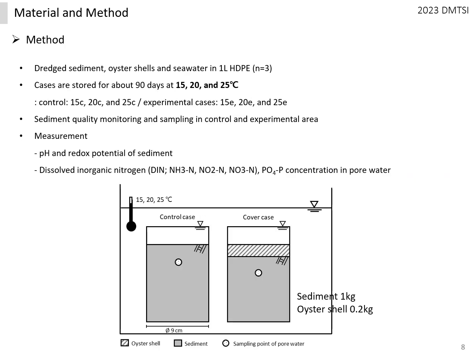The samples used in the microcosm were prepared by placing sediment, oyster shells, and seawater in 1-liter HDPE containers in order and sealing them with a cap. Each sample was replicated three times. The samples were stored in a water bath set at 5, 20, and 25 degrees Celsius.